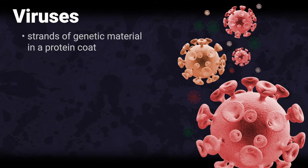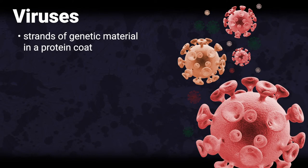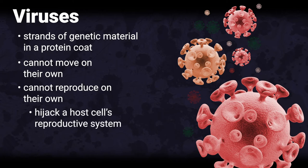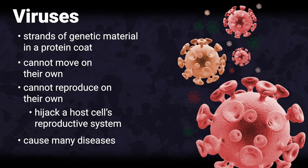Viruses are strands of genetic material in a protein coat. They cannot move on their own or reproduce on their own. Viruses hijack a host cell's reproductive system — when the hijacked cell reproduces, the virus reproduces. Viruses cause many diseases. Examples of viral diseases include the common cold, HIV-AIDS, influenza (also known as the flu), measles, rabies, and rotavirus disease.